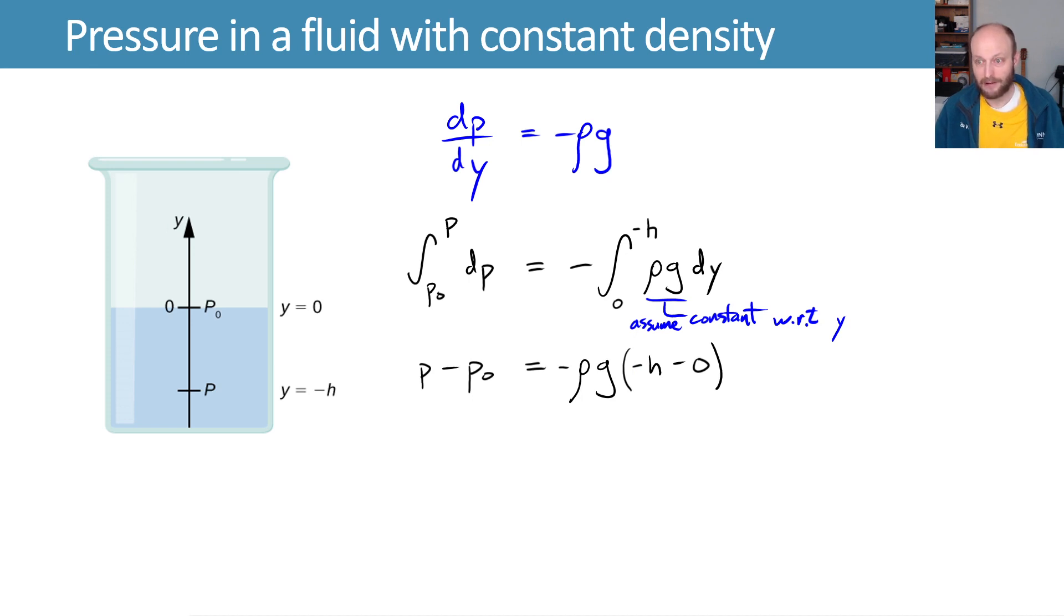Multiplying that out, we get p minus p₀ is equal to ρgh, or adding the p₀ to both sides, p is equal to p₀ plus ρgh, like before.